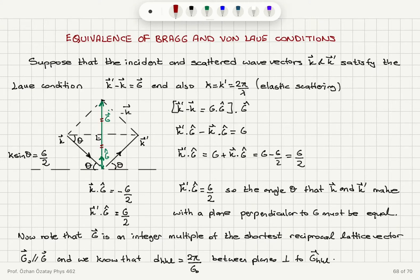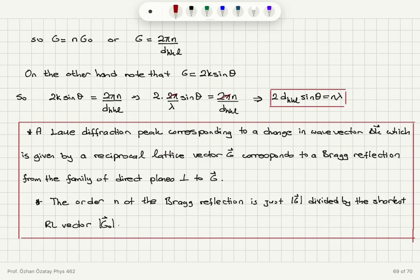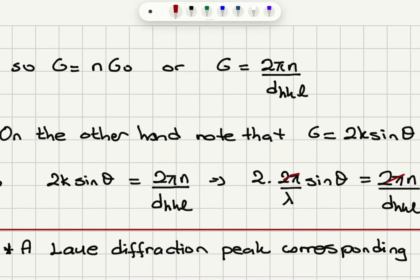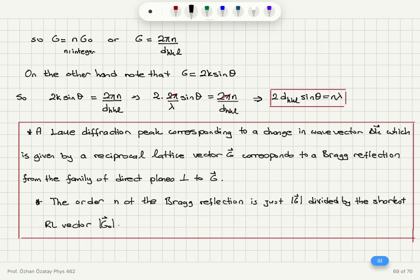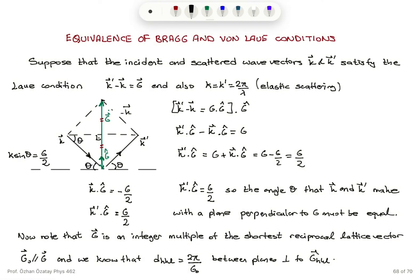The g vector is parallel to g₀, and the distance between hkl planes is 2π divided by g₀. So we can write the magnitude of the reciprocal lattice vector g as an integer multiple of g₀, giving g equals 2πn divided by d_hkl, the distance between the nearest hkl planes.